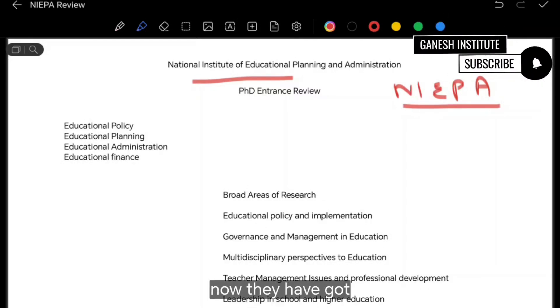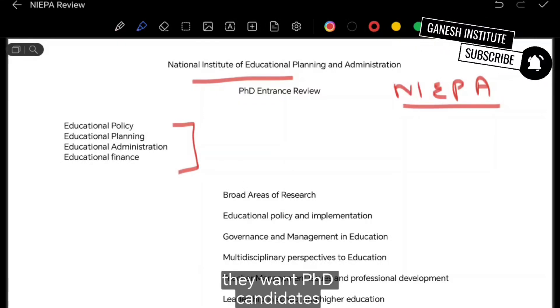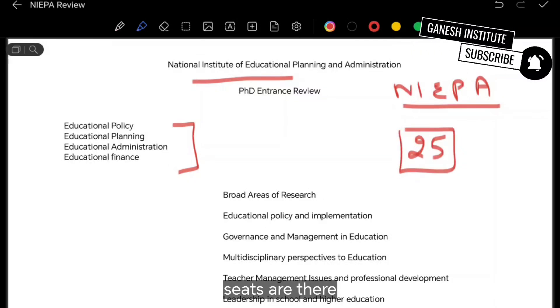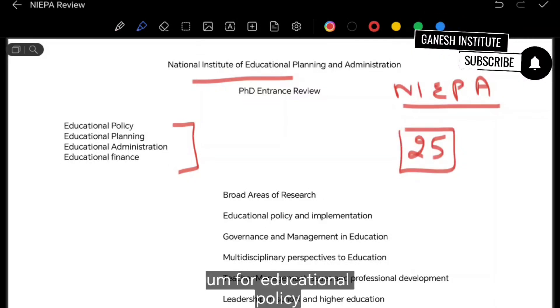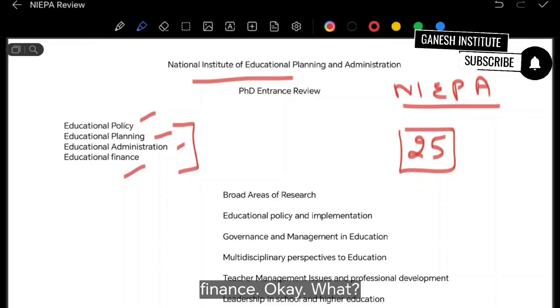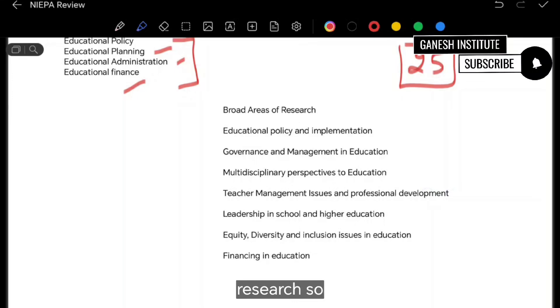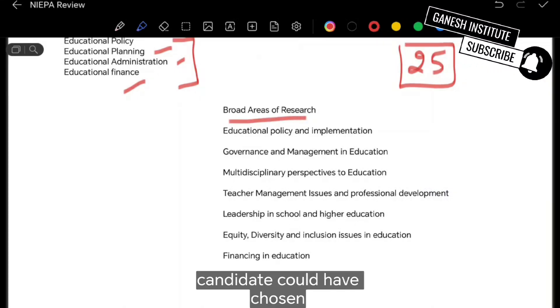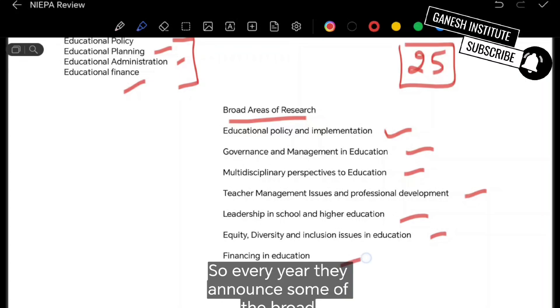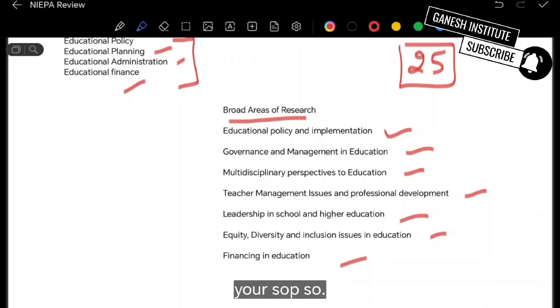They have got these four areas in which they want PhD candidates for. Around 25 seats are there for educational policy, planning, administration and finance. What are the broad areas of research? So candidates could have chosen from these areas. So every year they announce some of the broad areas in which you can have your SOP.